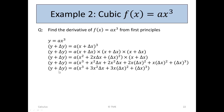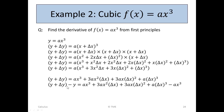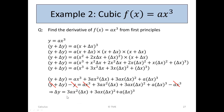That is our expression for y plus delta y. Multiplying the a in, we get y plus delta y equals ax cubed plus 3ax squared delta x plus 3ax delta x squared plus a delta x cubed. Then y plus delta y minus y is that same expression minus ax cubed. The two y's cancel and the two ax cubed terms cancel, leaving delta y equals 3ax squared delta x plus 3ax delta x squared plus a delta x cubed.